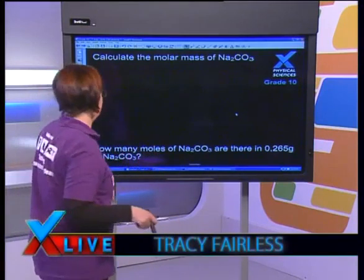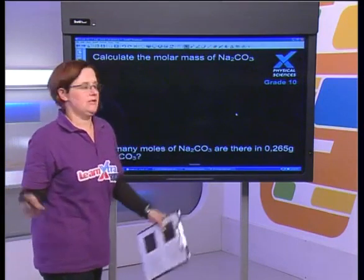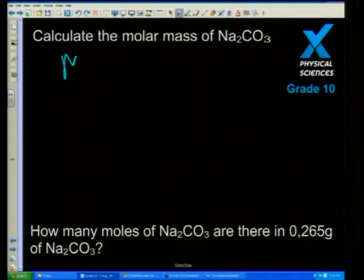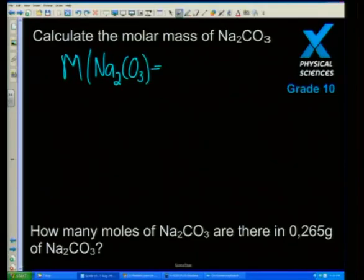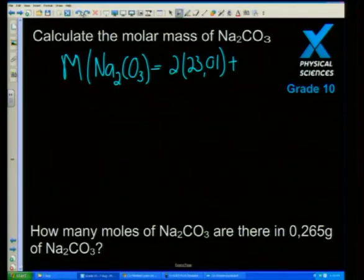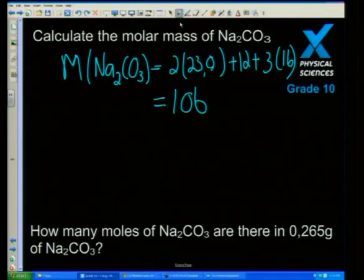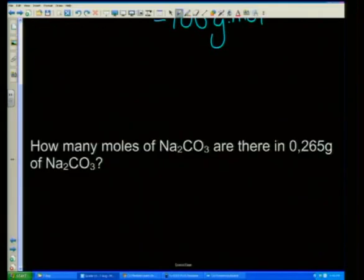For example: calculate the molar mass of sodium carbonate. So we start with the easy one — let's calculate the molar mass of Na₂CO₃. Sodium is 23.01, carbon is 12, and oxygen is 16. When we add it all together that gives us 106 grams per mole.